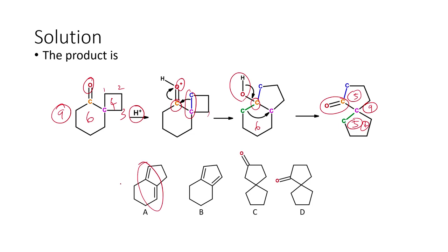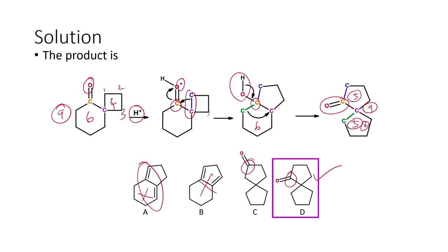There is no elimination that is possible or happening in this reaction. So product A is ruled out and product B is also ruled out, because here again we have the double bond. Between C and D, the only difference is the position of the carbonyl group. The last one, D, is the correct answer, because that is what is actually formed. The six-membered plus four-membered combination changed to two five-membered ring combinations, and the reaction proceeds via a carbocation-type intermediate.